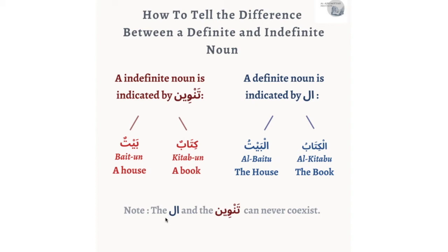Note: the al and the tanwin can never co-exist. That's why we have al-kitabu, al-baytu — but here we have kitabun, baytun. If I said al-kitabun or al-baytun, that would be a mistake, because al and tanwin can never co-exist. This is one of the main ways to differentiate whether a noun is definite or indefinite.